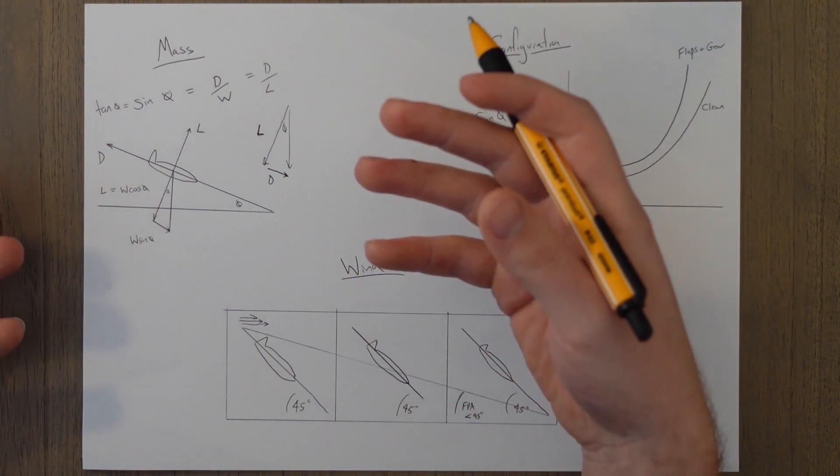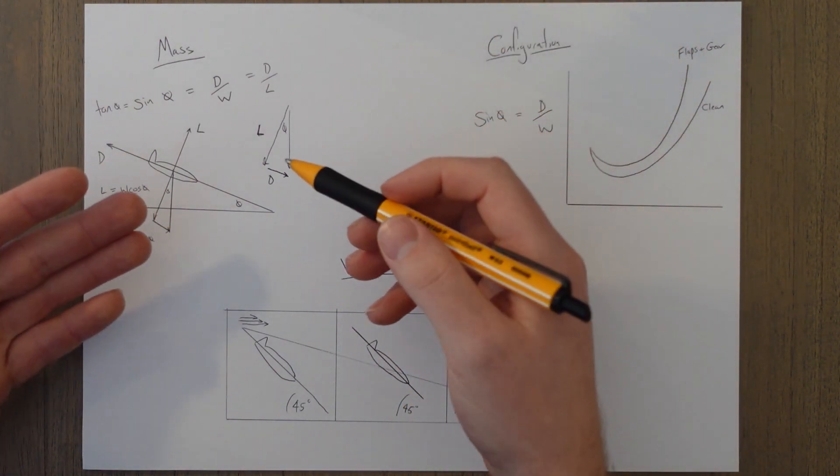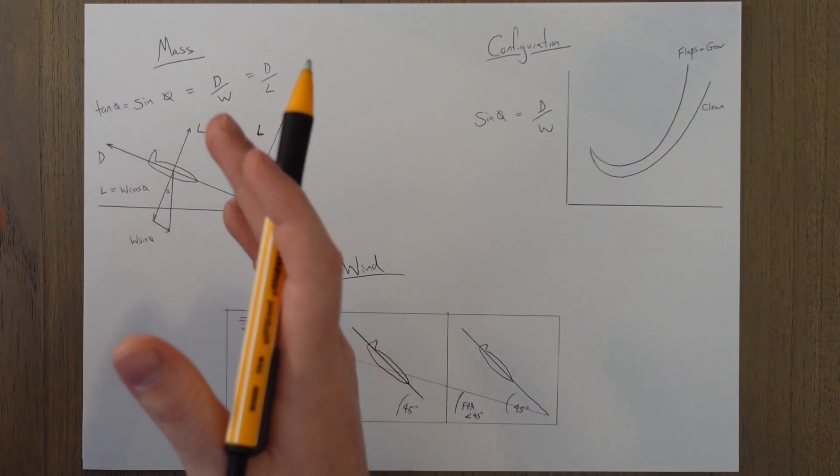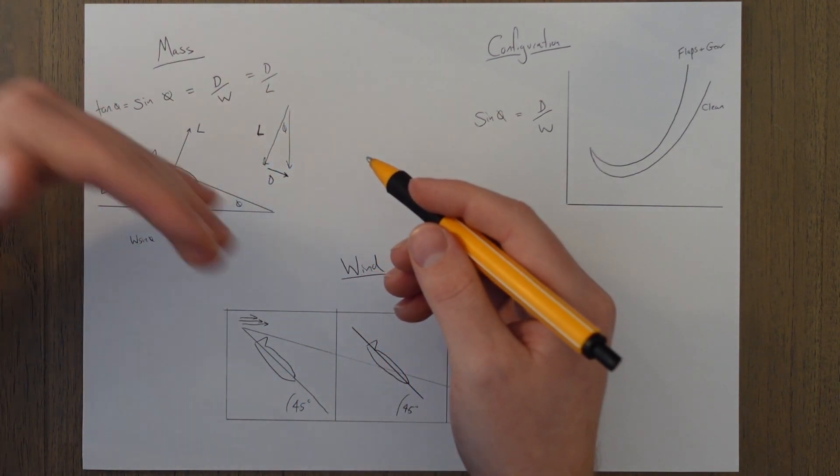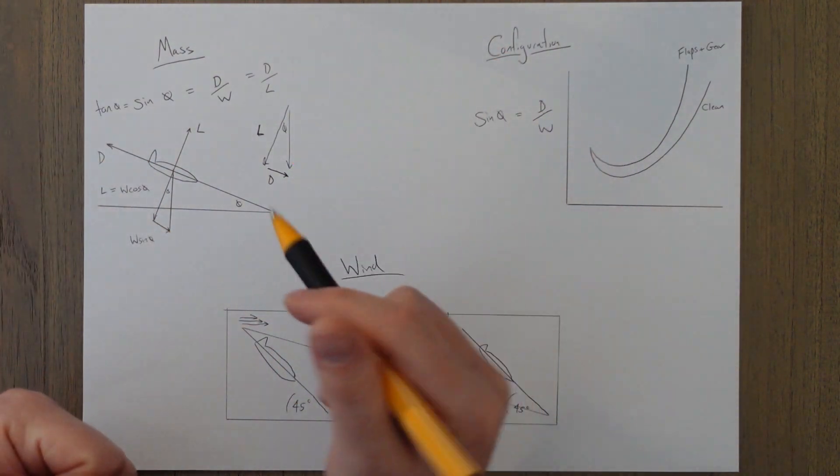The thing that will change is our rate of descent. Heavier aircraft basically need to fly faster in order to produce this more lift, so our speeds for both VMD and VMP will increase, meaning we will fly faster down the slope and also faster towards the ground, in other words a higher rate of descent.